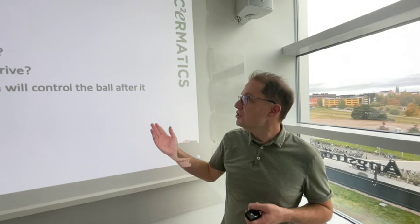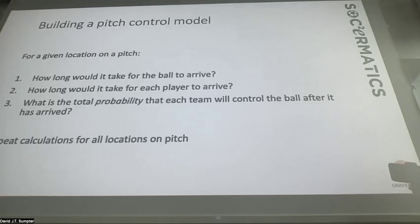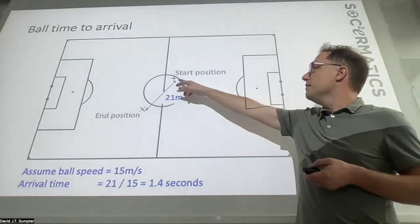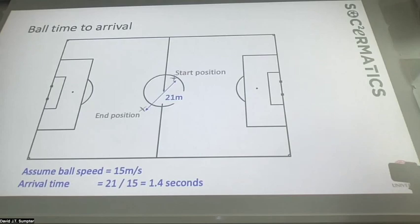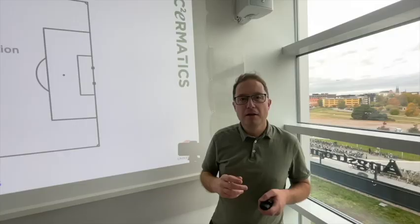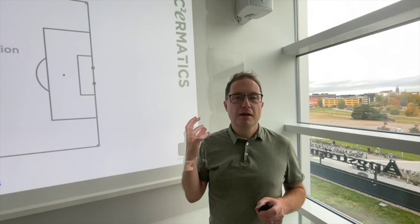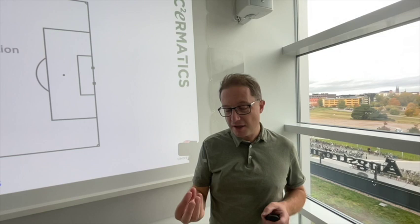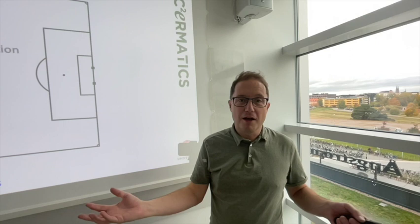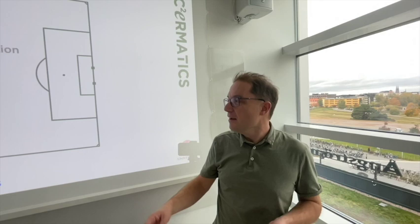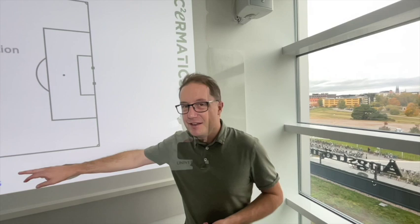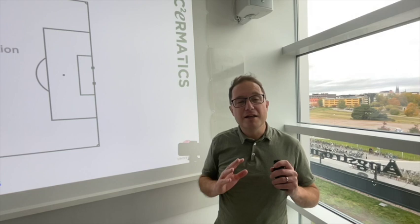Here is the pass studied: this is the start position and this is the end position. A few modeling assumptions are built in — you assume a ball speed, which gives you an arrival time. For this particular pass the arrival time is 1.4 seconds. This is a heuristic physics-based approach: a ball traveling at 15 meters per second gives you an arrival time, which is a good starting point and pretty much all you need to get going with a pitch control model.